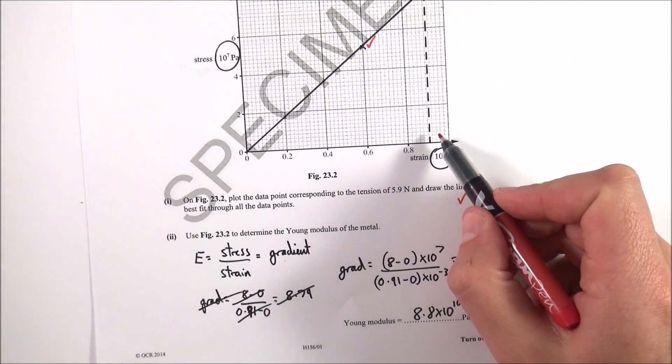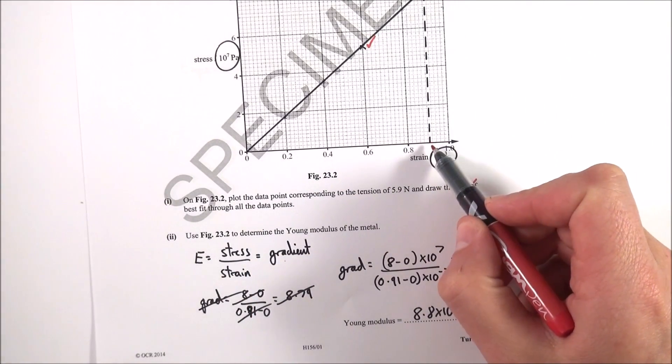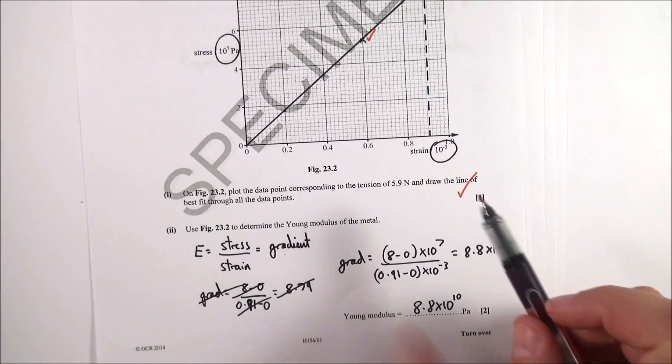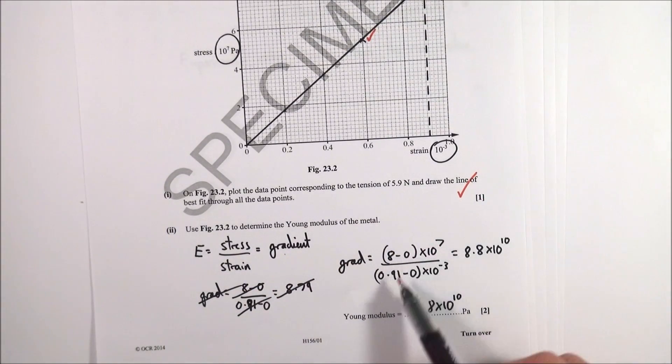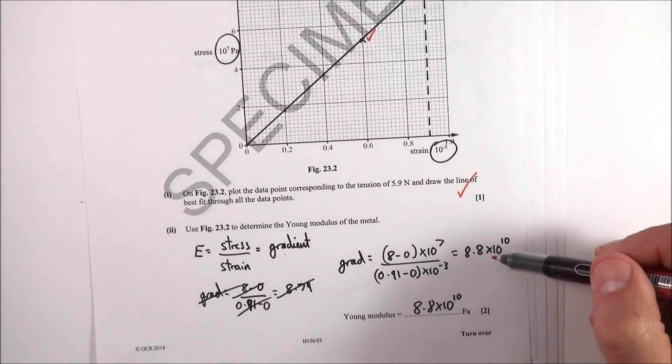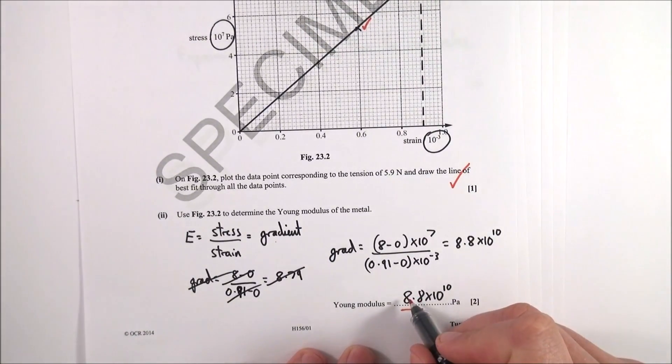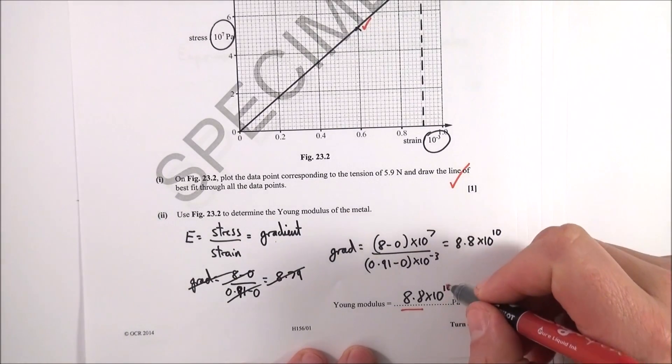It goes from 0 up to 0.91, which was what I estimated for my graph. I made a mistake the first time. The second time, the gradient equals this over this, which is a value of 8.8 times 10 to the 10. This is appropriate - two significant figures - and it's a very large number.